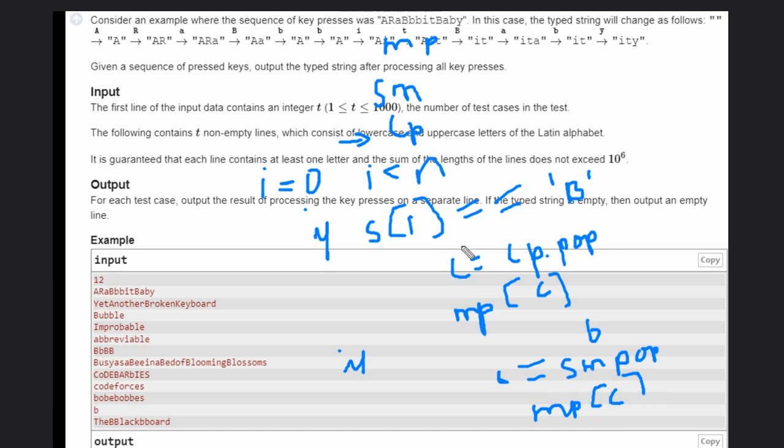And you need to append this MP of C again. In both cases, you need to do one more step, that is MP of I, because you don't need that character. Now what you need to do after these conditions, you need to check if the current character S of I is capital or small. If it is capital, push the index here. If it is smaller, push the index here.